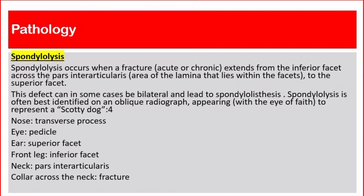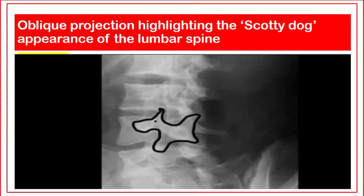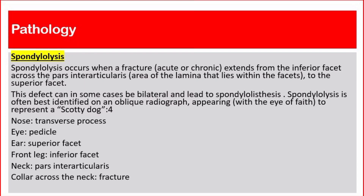The next pathology is spondylolysis. Spondylolysis occurs when a fracture, acute or chronic, extends from the inferior facet across the pars interarticularis to the superior facet. This defect can in some cases be bilateral and lead to spondylolisthesis. Spondylolysis is often best identified on an oblique radiograph, appearing to represent a Scottie dog. The nose is represented by the transverse process, the eye by the pedicle, the ear by the superior facet, the front leg by the inferior facet, the neck by the pars interarticularis, and the collar across the neck by the fracture.